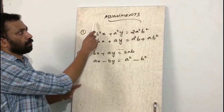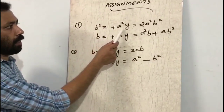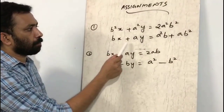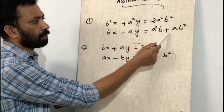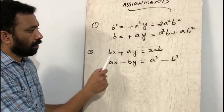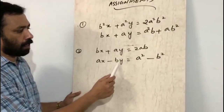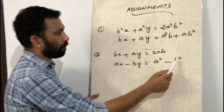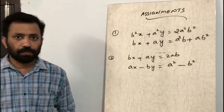Now try to do these assignments. First: b²x + a²y = 2a²b², bx + ay = a²b + ab². Second: bx + ay = 2ab, ax - by = a² - b². Thank you.